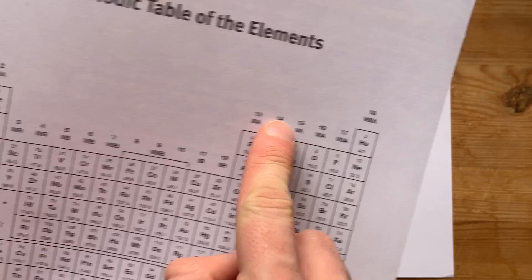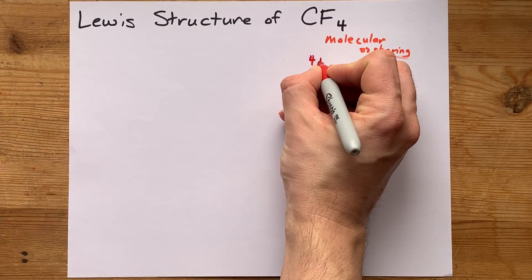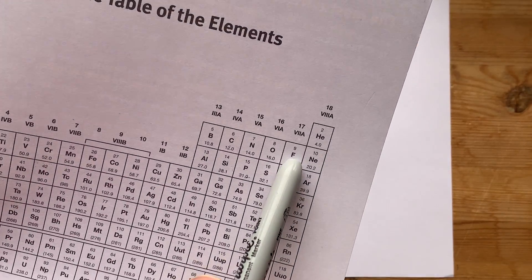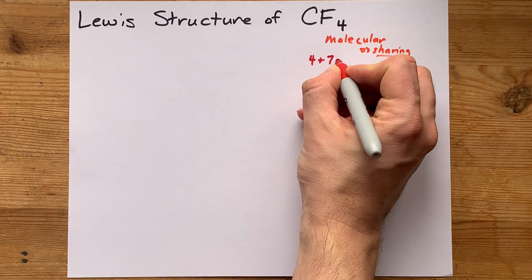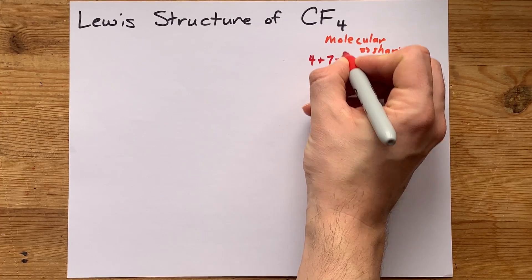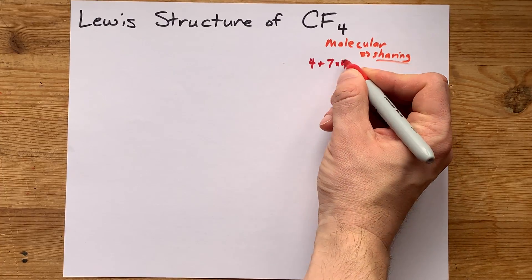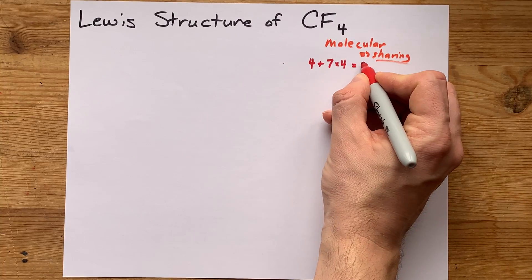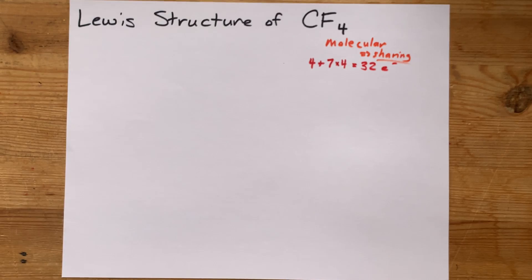Carbon is in group 14. That means each carbon brings four valence electrons. And fluorine is in group 17. That means each fluorine brings seven valence electrons. But remember there are four of them, so that's seven times four. 28 electrons from fluorine, plus four from carbon. We're going to need 32 electrons total in our structure.